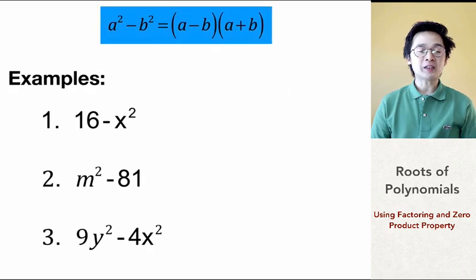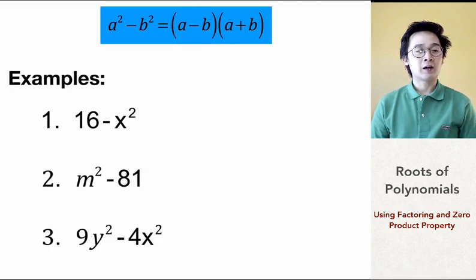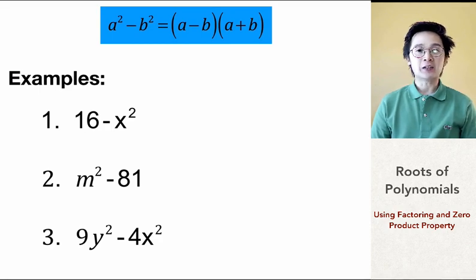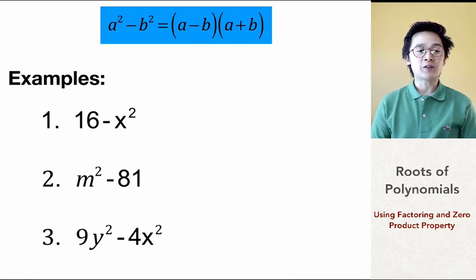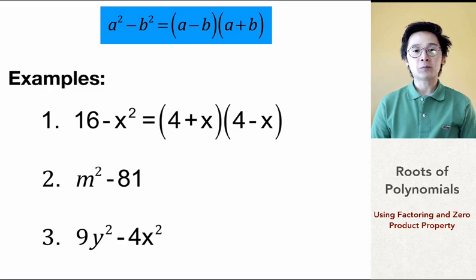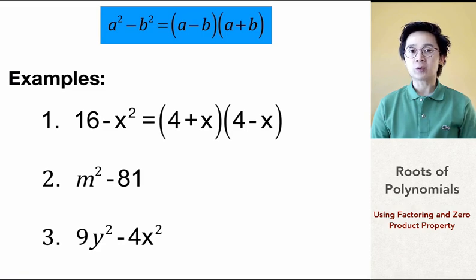For 16 − x², notice that 16 is a perfect square and x² is also a perfect square. The square root of 16 is 4 and the square root of x² is x, so the factored form is (4 + x)(4 − x). Similarly, m² − 81 factors into (m + 9)(m − 9), and 9y² − 4x² factors into (3y − 2x)(3y + 2x).